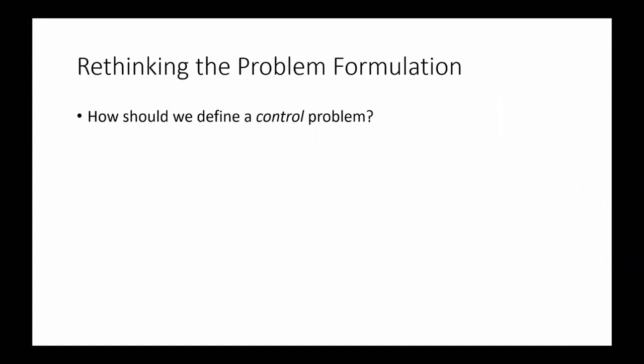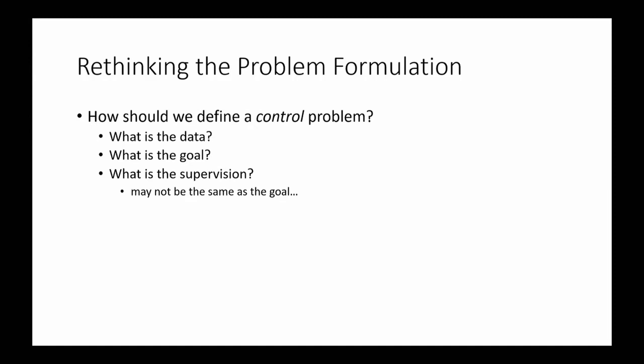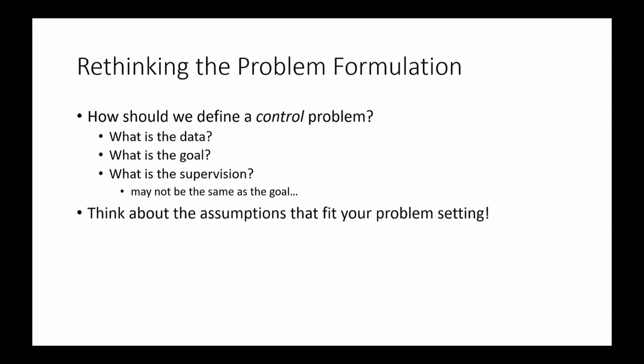If you're thinking about important open problems in RL, don't be afraid to think about the problem definition itself. The classic RL paradigm gives us one way to define a control problem, but it's not the only way. You can ask: what data will we use — data collected by the agent itself, prior data, or some combination? What is the goal — specified by reward function, description, user preferences, or demonstrations? What kind of supervision does it get? The reward function entangles goal and supervision, but that's not the only way to do it.